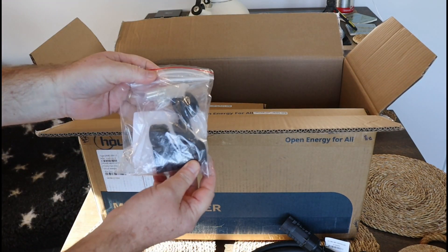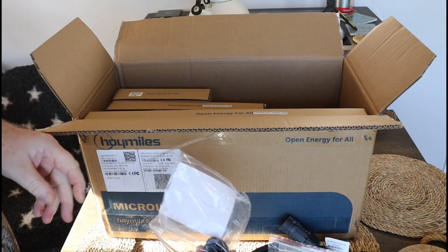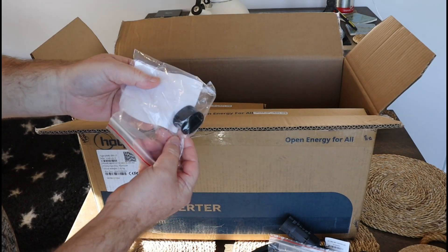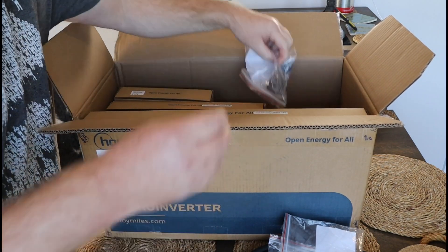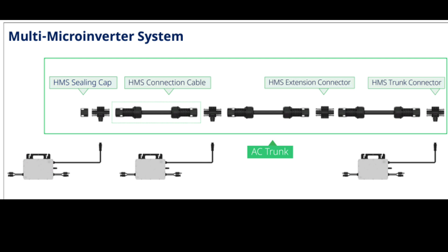These are the interconnectors - the components that connect multiple micro inverters together. There's an end cap and some T-junctions. Looking at the diagram on screen: starting from the left you've got the HMS ceiling cap, ending the network line. For each micro inverter there's a T-bar - a T-junction - where you connect the micro inverter into the bottom and the AC trunking cable along the top. So you're creating a network chain of AC connections, and once complete you run the AC cable back to your house. That's been the big question for me - how do you connect it to the house?